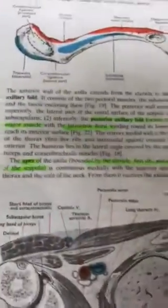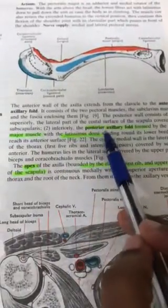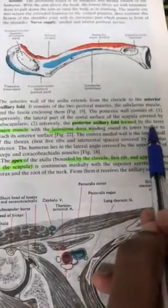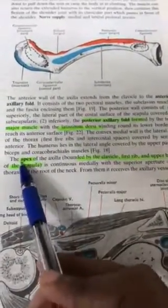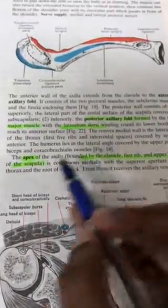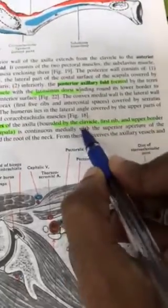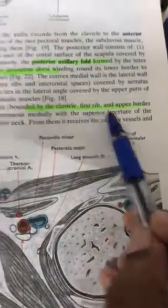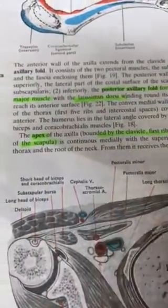The posterior axillary fold is formed by teres major and latissimus dorsi. The apex of the axilla is a very important MCQ — its boundaries are: the clavicle in front, the upper part of the scapula, and the first rib. These three structures — clavicle, first rib, and upper part of the scapula — form the apex.